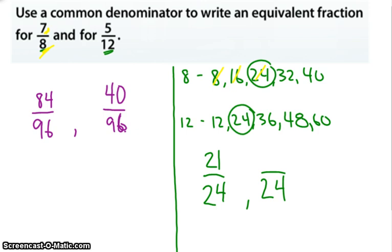And down here, I multiply 12 by 1, 2. Okay, so I multiplied 12 by 2 to get 24. So I'm going to multiply 5 times 2, and I'm going to get 10 as my new numerator over here.